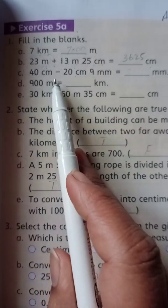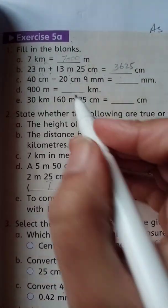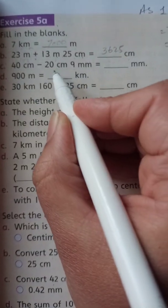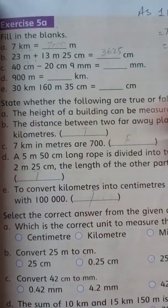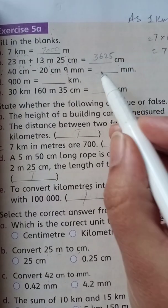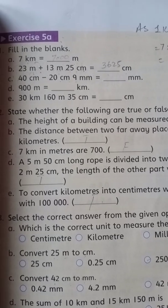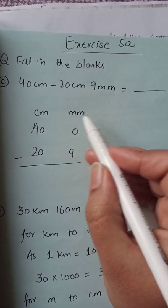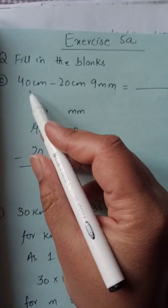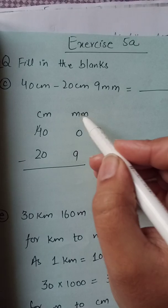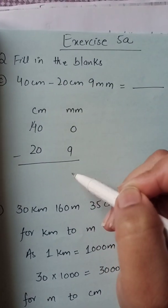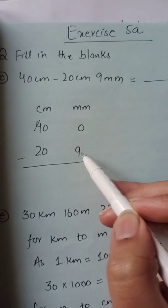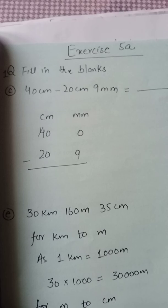Part (c): 40 centimeters minus 20 centimeters 9 millimeters, equal to how many millimeters? The first term (40 cm) does not have a millimeter part, while the second term has both centimeters and millimeters. So in the millimeter column of the first term, we place one zero, because the millimeter value (9) is a single digit. We write 40 in centimeters and 20 cm 9 mm below it.